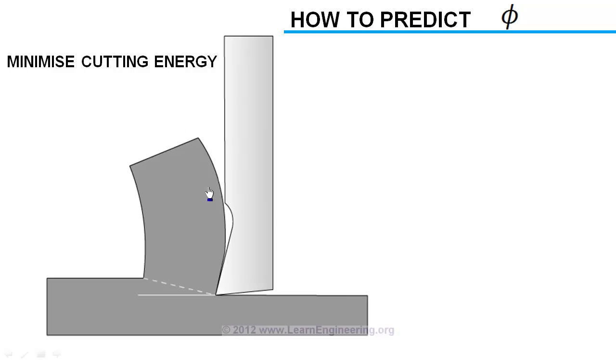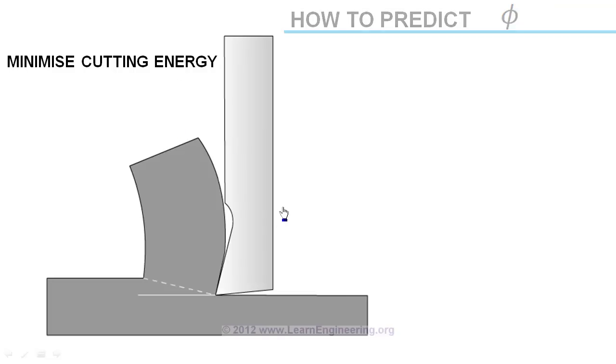Shear stress at an angle phi is given by this equation. By differentiating this equation with respect to phi and setting it to zero, one can obtain the plane on which shear stress is maximum as phi equals 45 degrees plus alpha over 2 minus beta over 2, where beta is the friction angle between tool and workpiece interface. Pretty simple equation to predict shear angle. This is known as Merchant analysis.